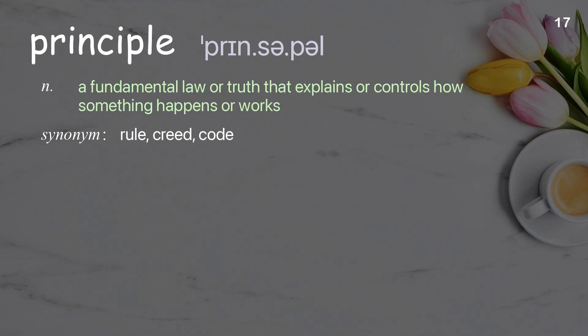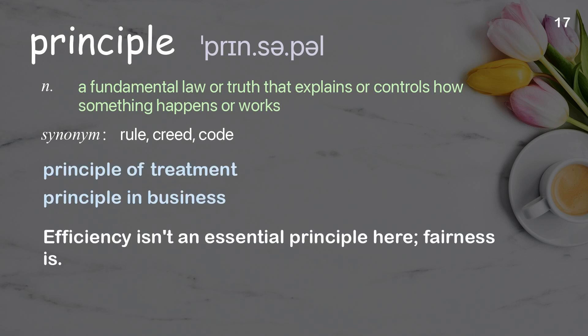Principle: A fundamental law or truth that explains or controls how something happens or works. Examples: Principle of treatment. Principle in business. Efficiency isn't an essential principle here — fairness is.